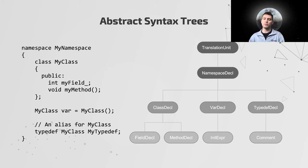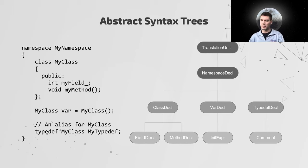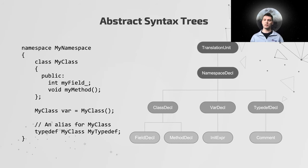Abstract syntax trees are a superset of parse trees and represent syntactical elements as nodes in a tree-like data structure. In this example, there's a class declaration, variable declaration with an initializer, and a typedef declaration, and they're all inside a namespace declaration. An overly simplified AST is shown on the right with a translation unit or file scope serving as the top node in the tree. Enclosed in the namespace declaration are the class, variable, and typedef declarations, with the child branches of each node consisting of their associated syntactical elements, including field and method declarations, initializers, and comments.